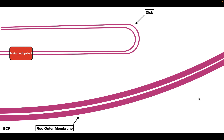Metarhodopsin-2 then activates a G-protein called transducin. Transducin is going to activate a number of other proteins, which we'll talk about in a bit. But before we talk about what transducin does, I want to talk about a specific process called bleaching.